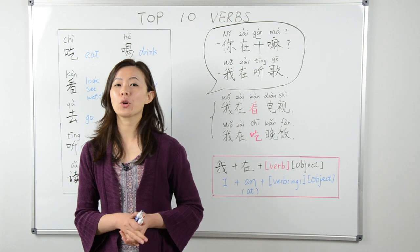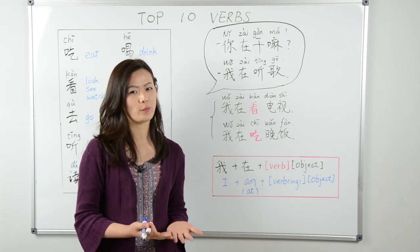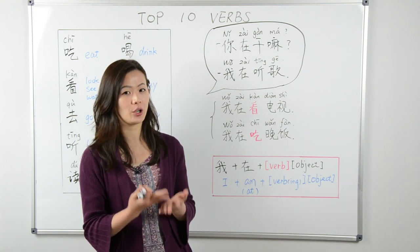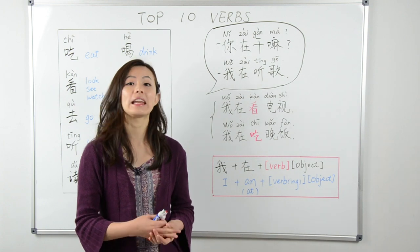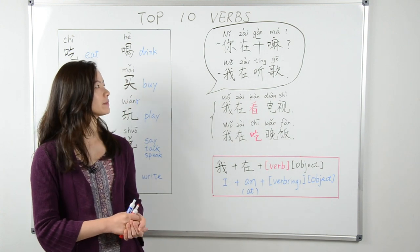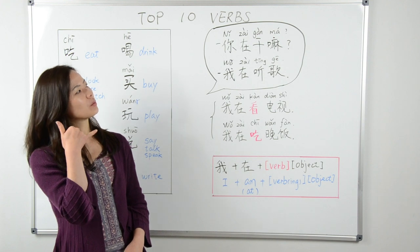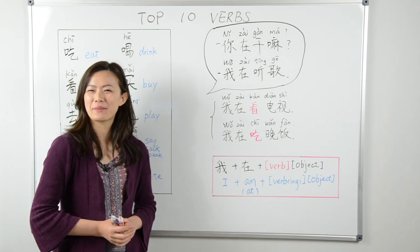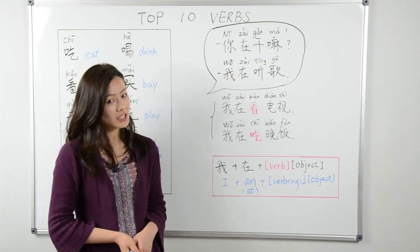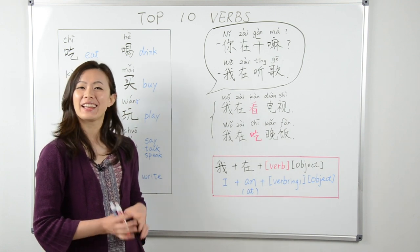Next, you're going to hear a dialogue between two friends over the phone. I'm going to read it, but while I'm reading, I want you to take note of where the verb is and how it is used in a sentence. Ready? 你在干嘛? 我在听歌。 One more time, a bit slower: 你在干嘛? 我在听歌。 Did you find the verb?